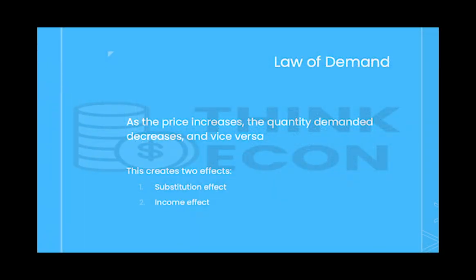If you're an econ student at any level, or even just generally interested in economics, there's a good chance that you've heard of the law of demand. As prices increase, quantity demanded of a good decreases and vice versa. Therefore, the relationship between price and quantity demanded is negative and the demand curve has a negative slope. This relationship causes two effects: the substitution effect and the income effect.